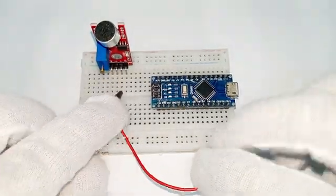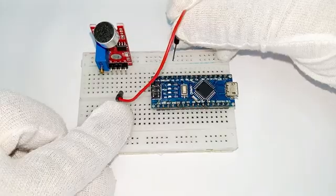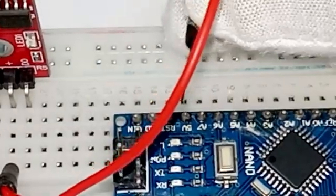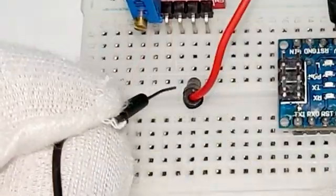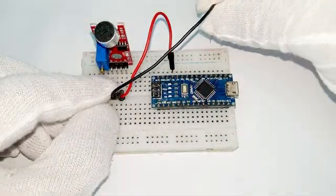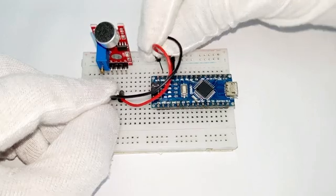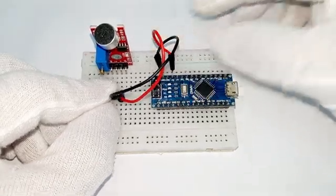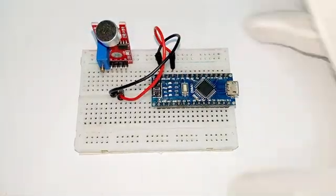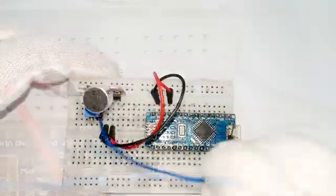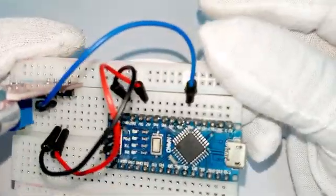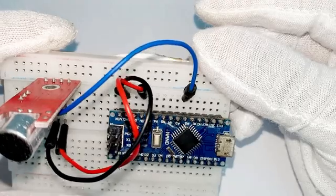Connect the positive of Microphone Module to positive 5V of Arduino Nano. Connect the GND of Microphone Module to GND or ground of Arduino Nano. Connect the A0 of Microphone Module to A2 of Arduino Nano.